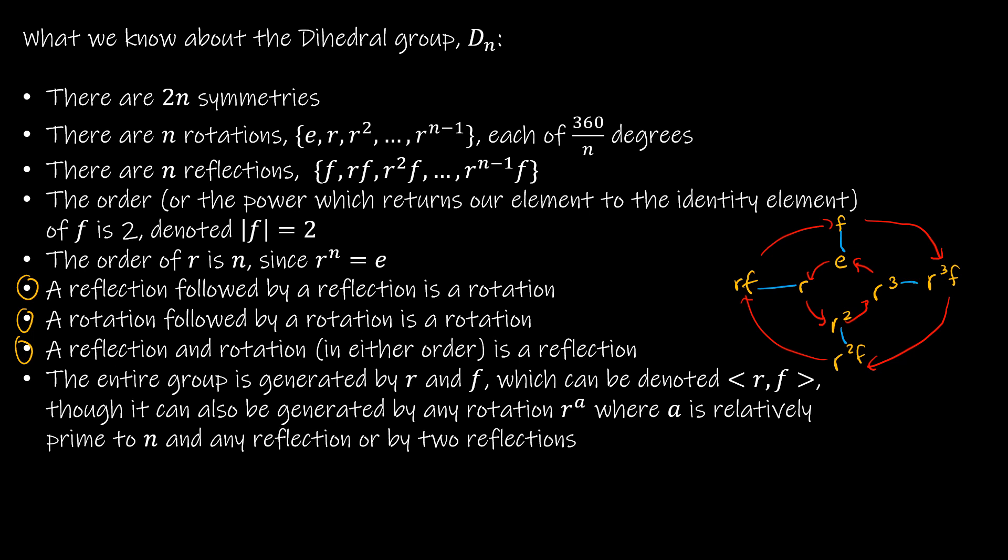And then these guys were all blue. So, when I say that the entire group is generated by R and F, and the way that I've denoted it here, it just means there's two actions. So, one of the actions is R, which was the red one, and the other action was F, which is the blue one.